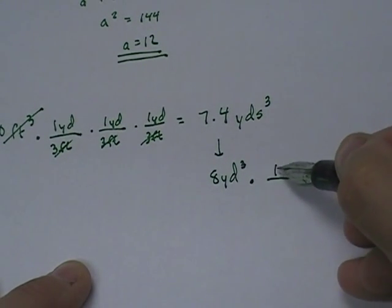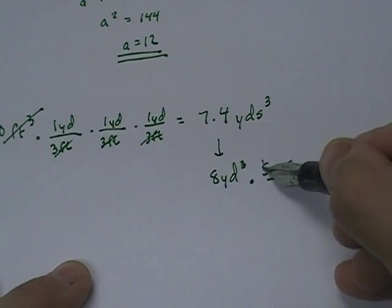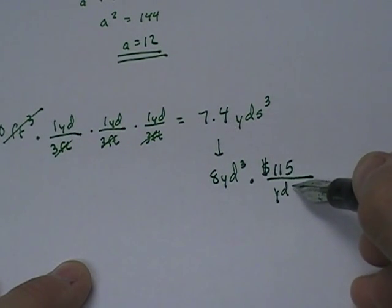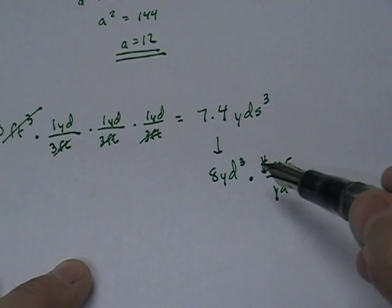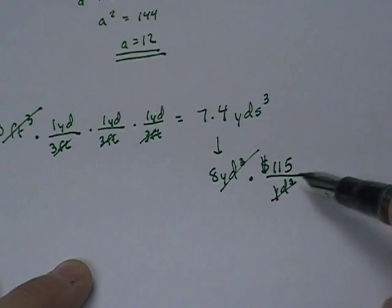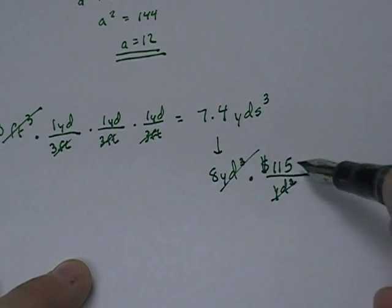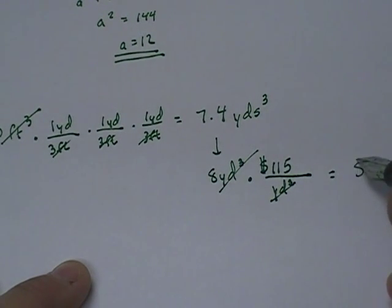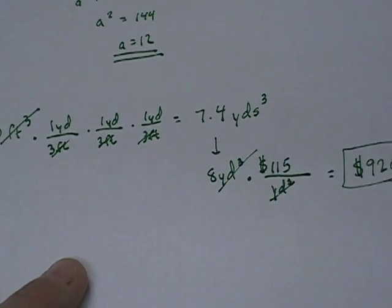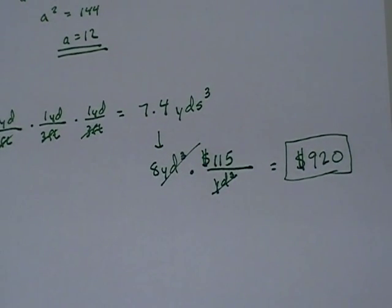And then what do we know? We know it's $115 per cubic yard. So what happens? These cancel out and we have 8 times 115. Well, 8 times 115 is $920. So $920. So to pour this trapezoidal patio would cost you $920. So I hope you enjoyed this video. And if you have any questions, please let me know.